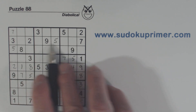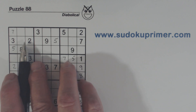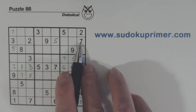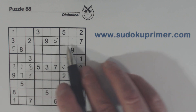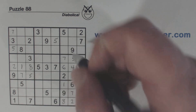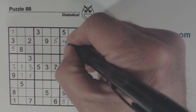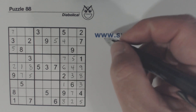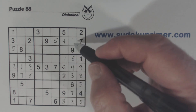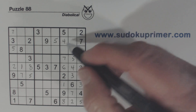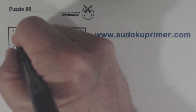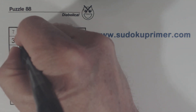Let's look at this row. What are we missing? One, four, six, eight. Here's a one, six, and an eight, so that's a four right there. So we're missing one, six, and eight. There's a one and an eight, so that's a six.